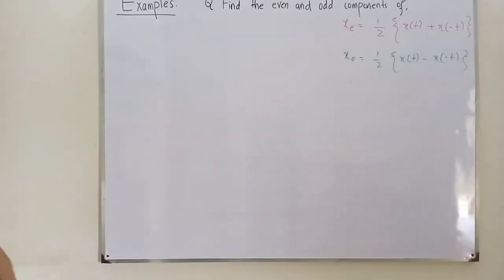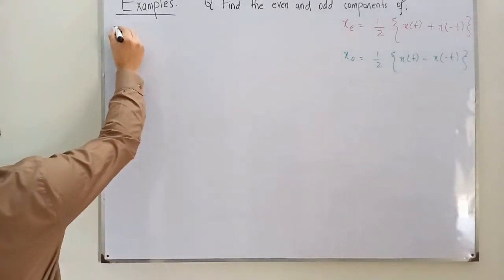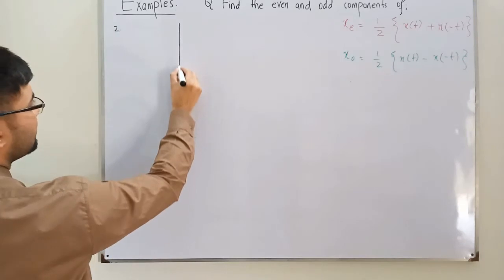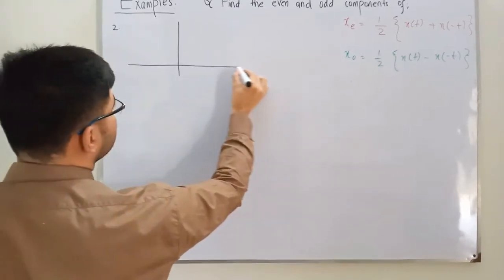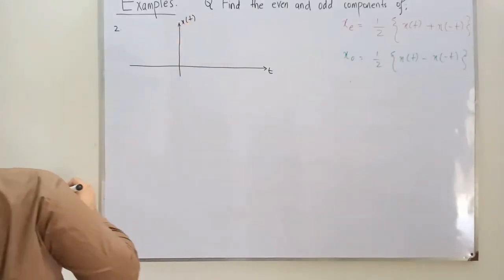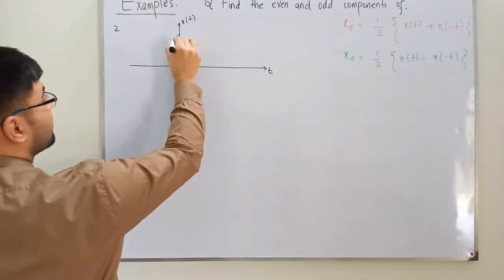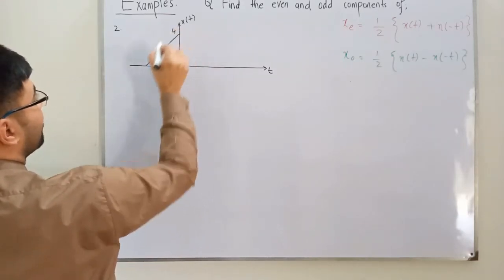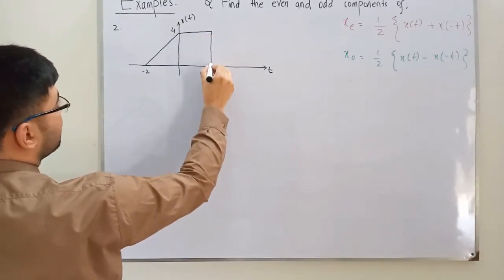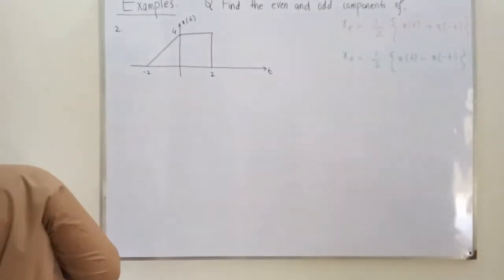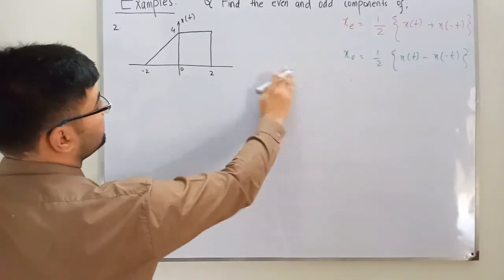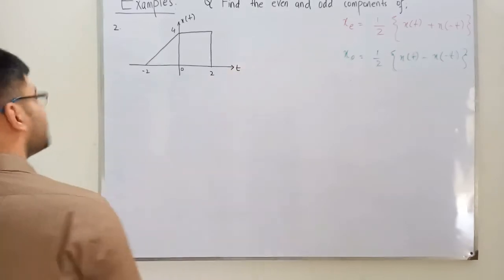Now we look at a graphical approach. A graph is given: the function x(t) is a piecewise linear signal. The point at the left is negative 2, the point at the right is positive 2, and the amplitude reaches 4. We are asked to find the even and odd components graphically.